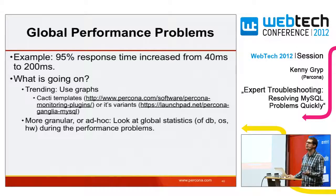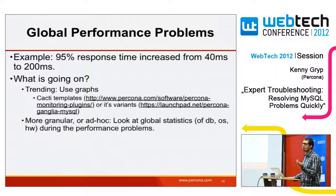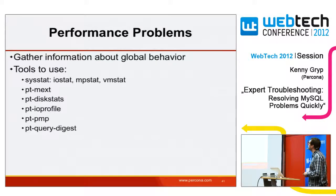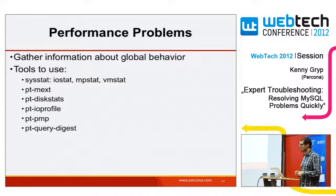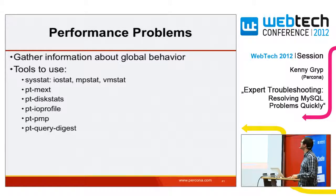Other tools we can use: SYSTAT — IOSTAT for I/O characteristics, MPSTAT for CPU usage, VMSTAT for memory usage. From the Percona Toolkit: pt-mext, pt-diskstats, IOProfile, PMP, and Query Digest. I'll show examples. About trending — I have a lot of graphs. Here we have the amount of MySQL connections, max connections is set to 500, max used connections was 330. Between April 5th and 6th we can see connections rose — maybe the database was stalling or the application was misbehaving.